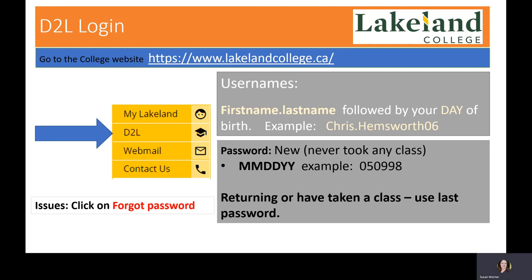For your password, new students who have not taken any class — con-ed or even dual credit — will use your date of birth in the format month, day, year. That will be your password. So for example, 050998. You must have two digits for each of the numbers.